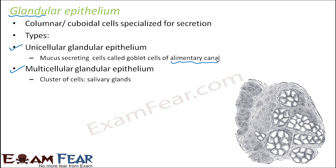The other category is multicellular glandular epithelium, which is made up of many cells and is found in the salivary gland. The salivary gland secretes enzymes like salivary amylase, which helps make food easier to break down into simpler forms. This was another special type of epithelium.